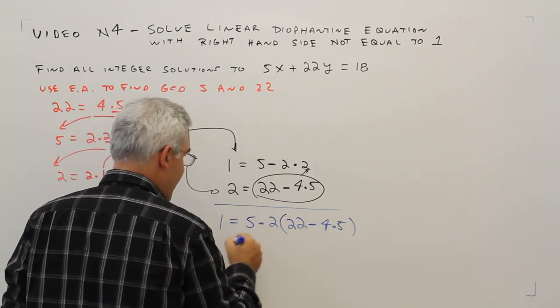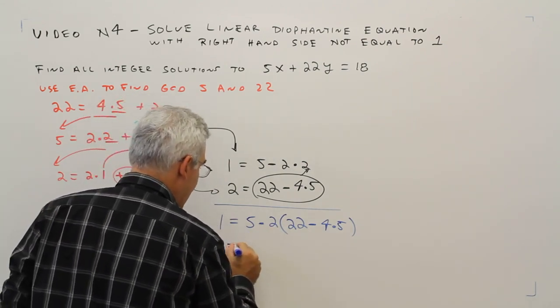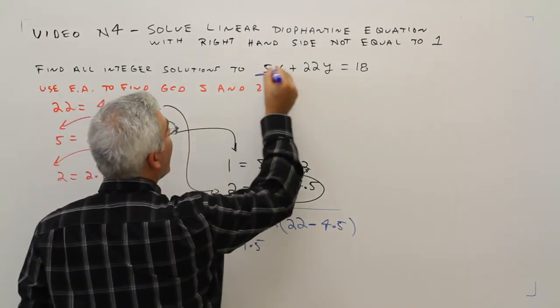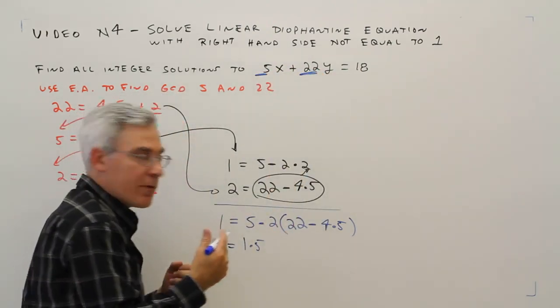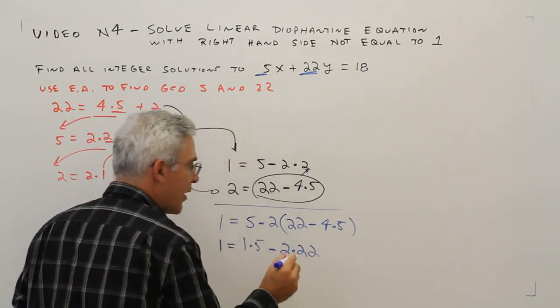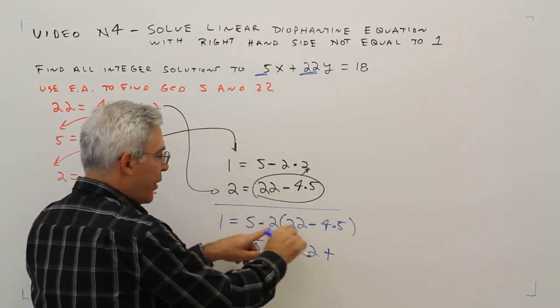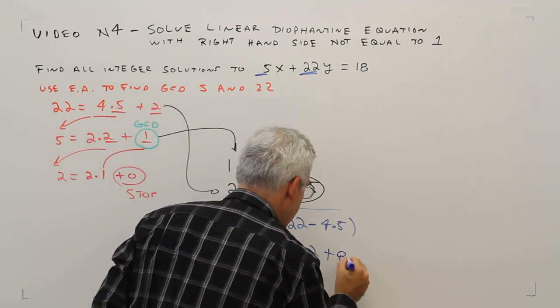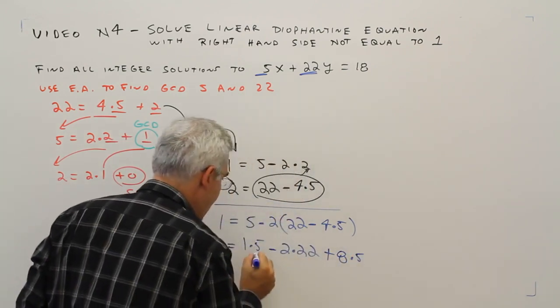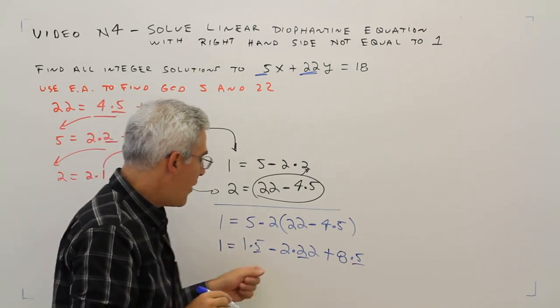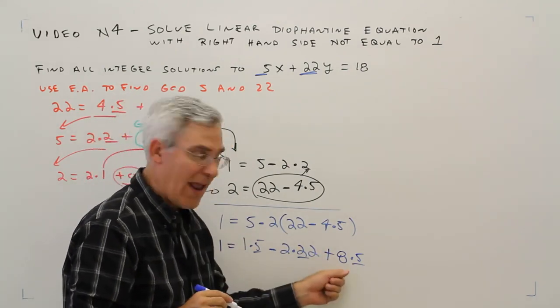Now let's distribute. 1 equals... I can go 1 times 5. Again, I want to keep those coefficient numbers. Minus 2 times 22 plus I'll make this be 8 times 5. We're keeping 5s and 22s. And then I've got 1 times 5 and 8 times 5. That's going to be 9 times 5.